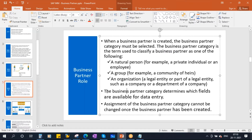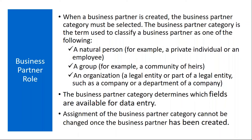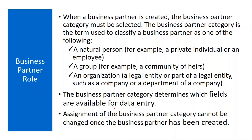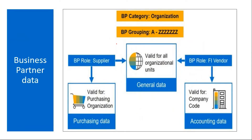The Business Partner category determines which fields are available for data entry. An important point to note: the assignment of a Business Partner category cannot be changed once the business partner has been created and saved. For vendors in MM, you will normally use the category Organization.